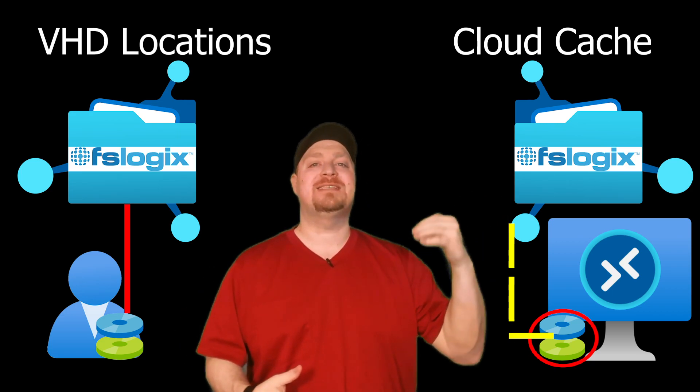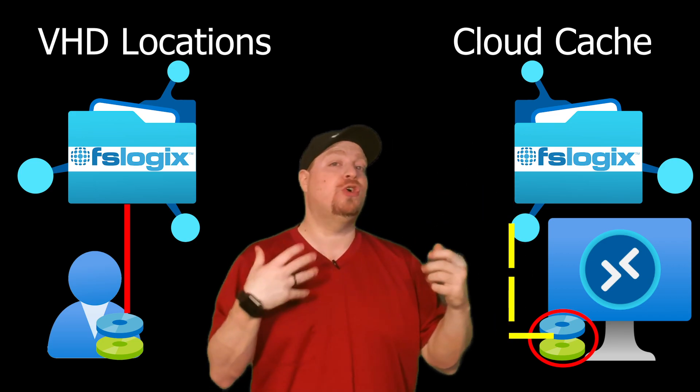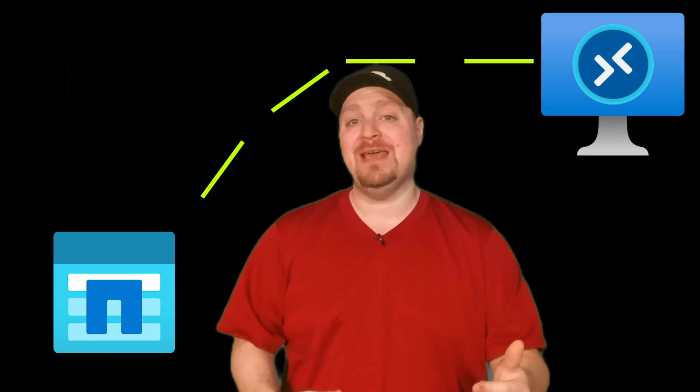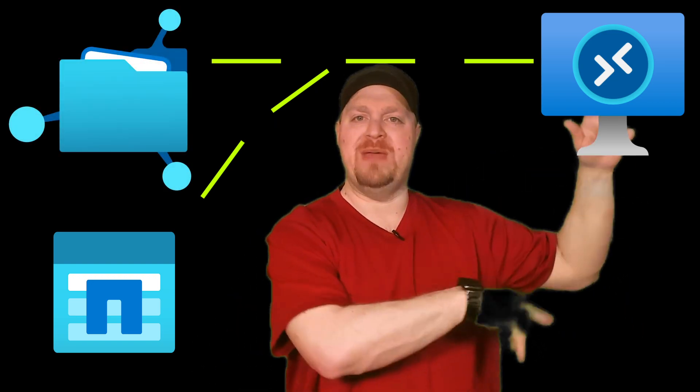Cloud Cache gets an upper hand for disaster recovery. Since it's writing all data on the session host itself and then replicating to storage, you can look at it more as a disaster recovery tool. In VHD locations, if you lost the file share, all users would lose their profiles — FSLogix would fall back to a secondary share when they log back in. With Cloud Cache, it's like nothing happened: all writes still happen locally, so it would seamlessly make the secondary share the new primary and sync everything once the original comes back online.